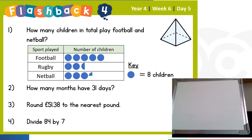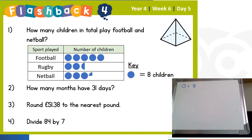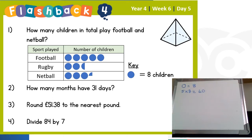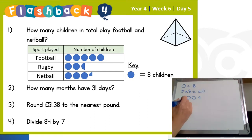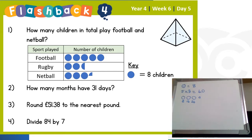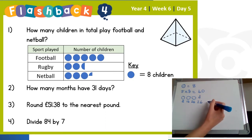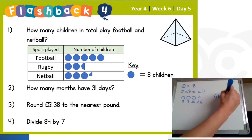For the pictogram, the important thing is to see what the picture is worth — the circle is worth eight children. For football there are five circles, so five times eight is 40 children. For netball there are three full circles and a quarter circle: 8, 16, 24, and a quarter of eight is two, making 26 children. So altogether in total that's 66 children.